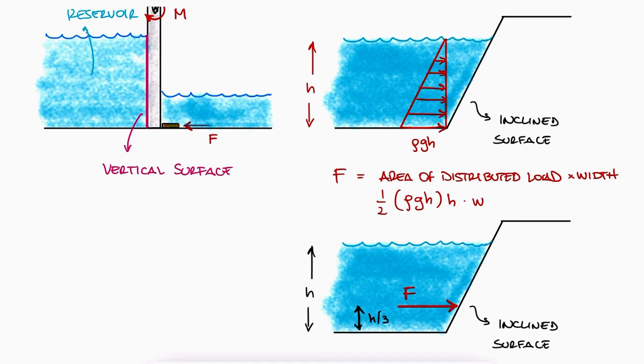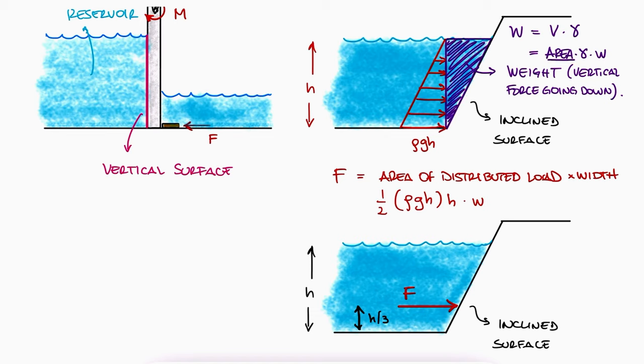Of course, on an inclined surface, the weight of the liquid, which is a vertical load, also affects the surface. The weight of the liquid would be the volume times the specific weight, which for a 2D representation is the area times the specific weight times width. The location of the simplified point load is located one-third of the way from the side of the triangle.